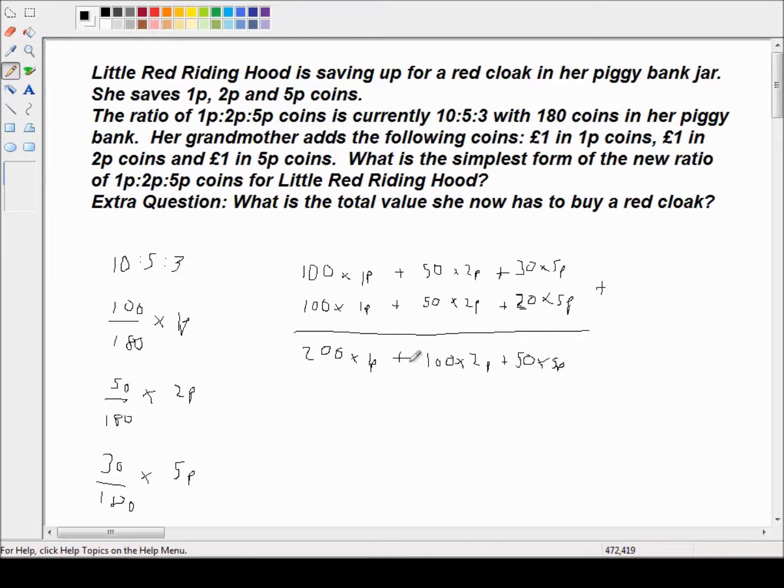And while we're here, before we start simplifying, let's just add these up and find out how much money she's had for this extra question bit. So that's £2 plus £2 plus £2 plus £2.50. That's a total of £6.50.